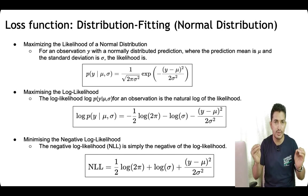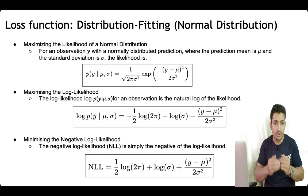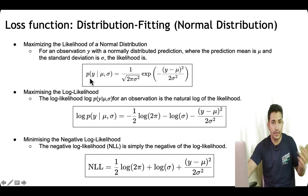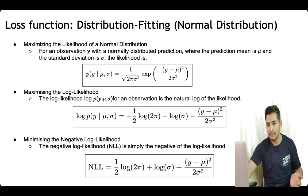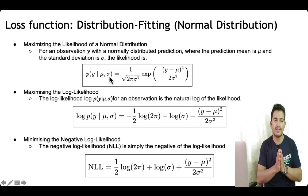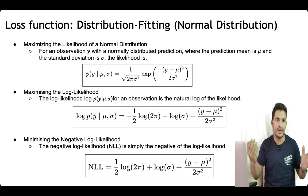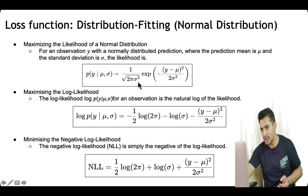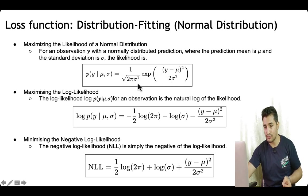In the salary example, we assume the data follows a normal distribution. Given the training data where y is the salary of people we already know, we want to estimate mu and sigma — the parameters of the normal distribution. Once we have mu and sigma, we can answer all queries around range or confidence interval.